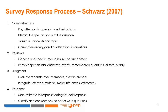Let's think about the survey response process. There are four main stages according to Schwartz (2007): comprehension, retrieval, judgment, and response. The comprehension stage involves the process of paying attention to questions and instructions, identifying the specific focus of the questions, and translating concepts and logic. It is important to use the correct terminology and qualifications in questions.